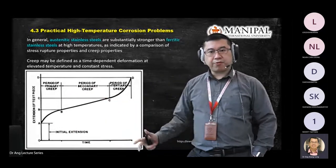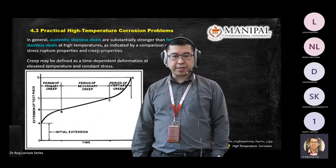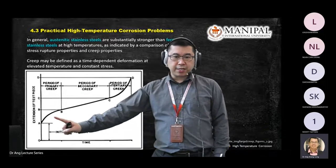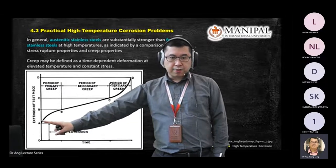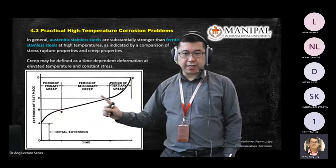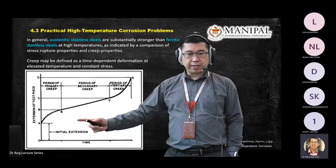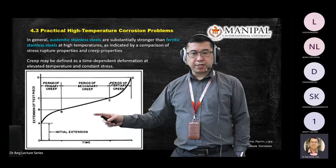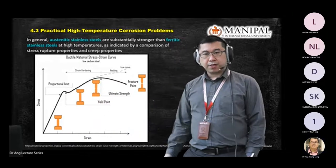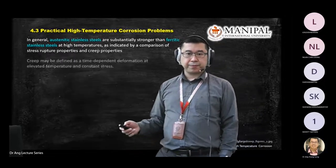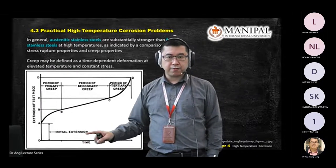This is a sample graph expected in the creep test. You can see the curve shape and behaviour over time. From this point until this point is when you elevate the temperature. The shape is a bit different — this is the creep test graph shape, this is the tensile test graph shape. You can see the difference. The creep test is plotted versus time.